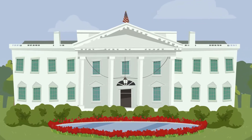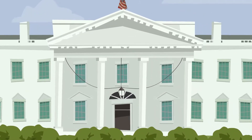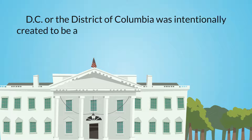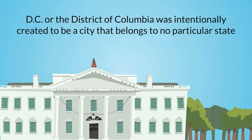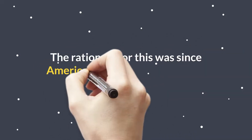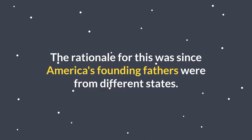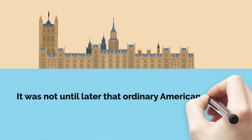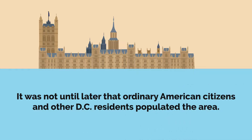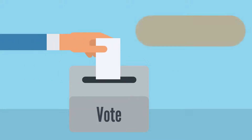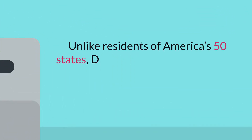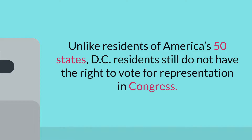America's capital is in Washington, D.C., which, strange as it seems, is a separate entity from the 50 states. It is not considered a state at all, actually. D.C., or the District of Columbia, was intentionally created to be a city that belongs to no particular state, and it's still this way today. The rationale for this was since America's founding fathers were from different states, they envisioned D.C. as a place for them and future American leaders to govern and go back to their respective home states. It was not meant to be a place for people to live. It was not until later that ordinary American citizens and other D.C. residents populated the area. D.C. residents were unable to vote in presidential elections until fairly recently, and unlike residents of America's 50 states, D.C. residents still do not have the right to vote for representation in Congress.